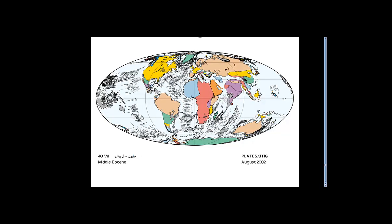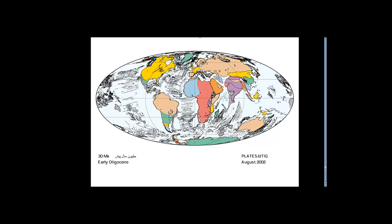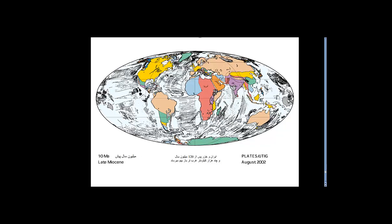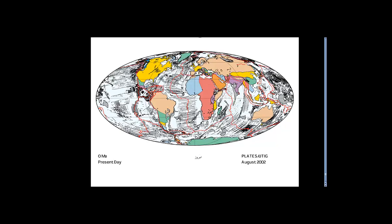50 million years ago. 30 million years ago, you can see now. 20 million years ago. You can see now Iran is pretty much trapped between Eurasia, Africa, and India. This is 10 million years ago. And this is the present position.